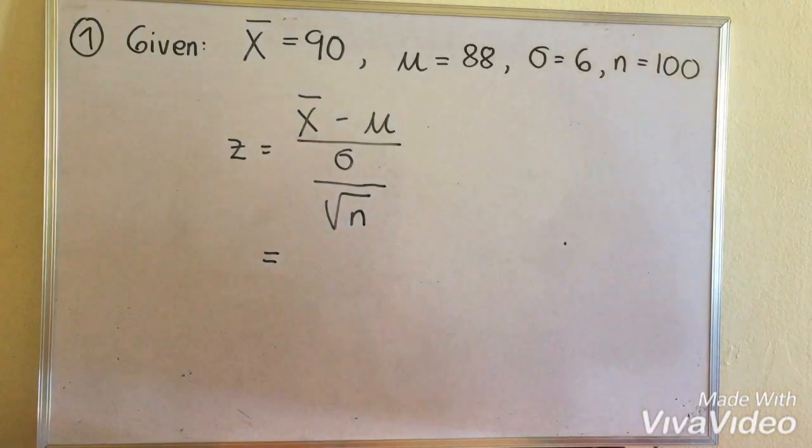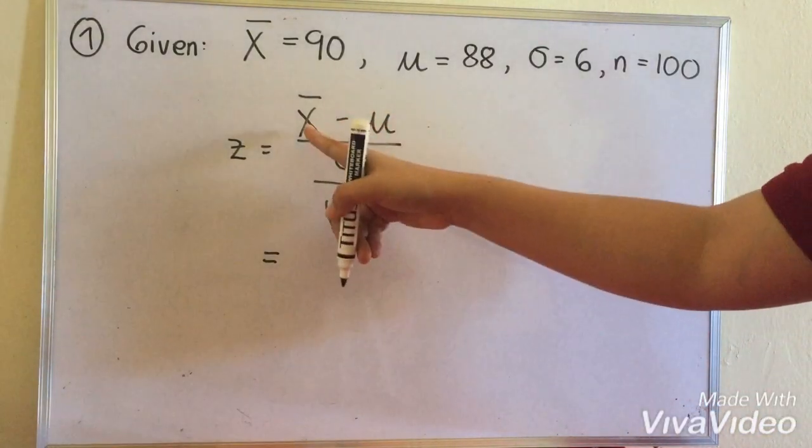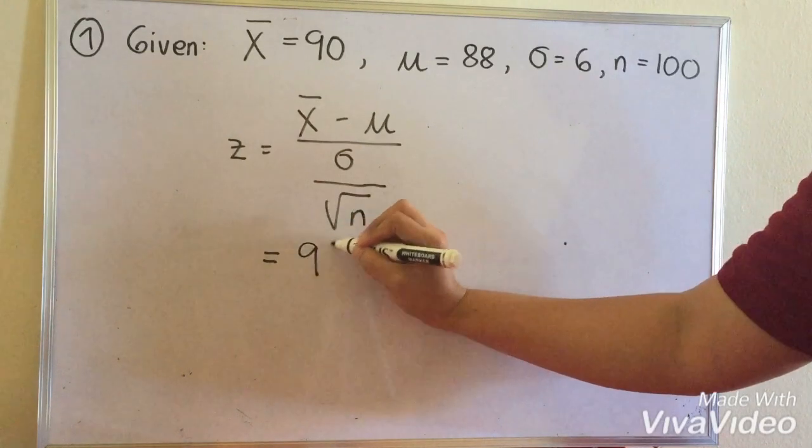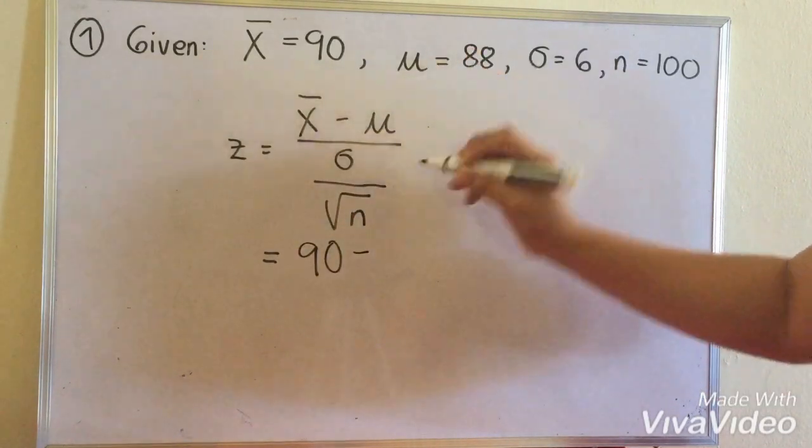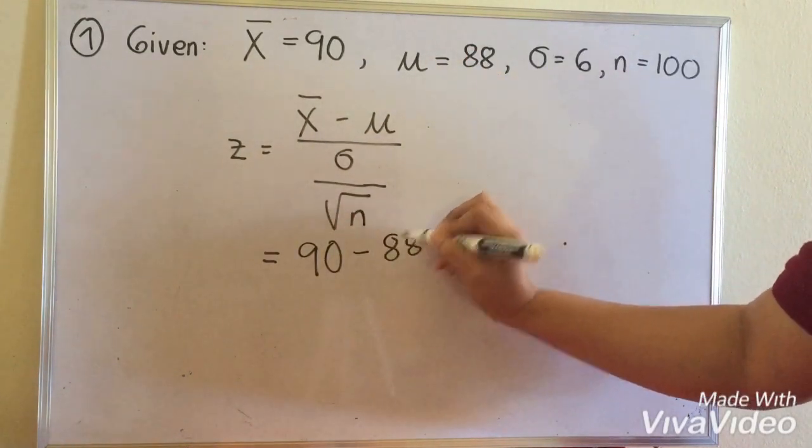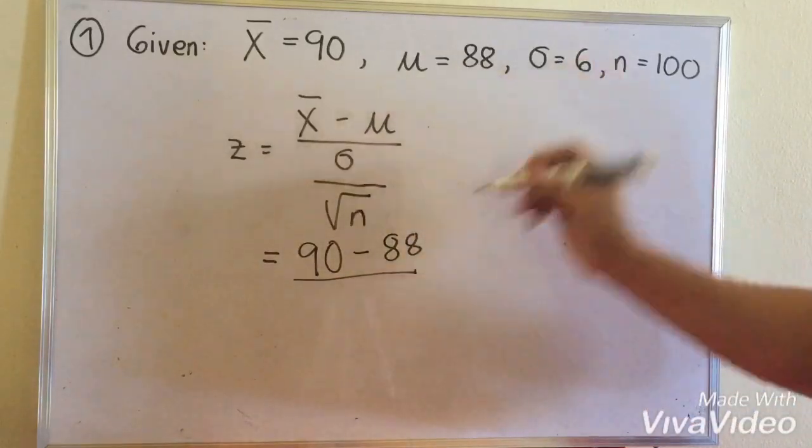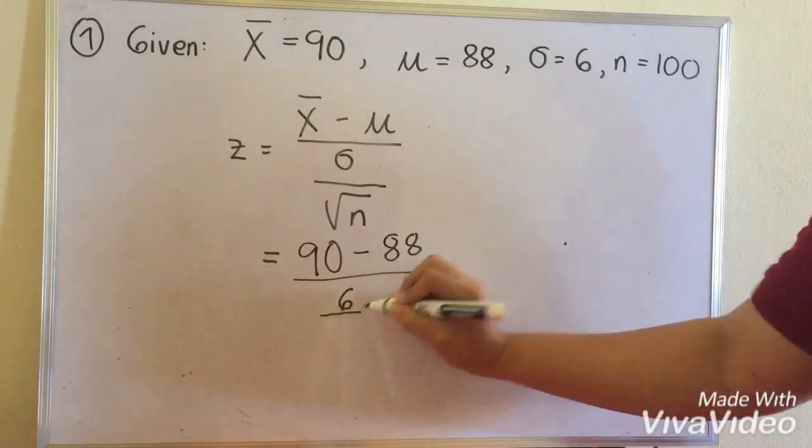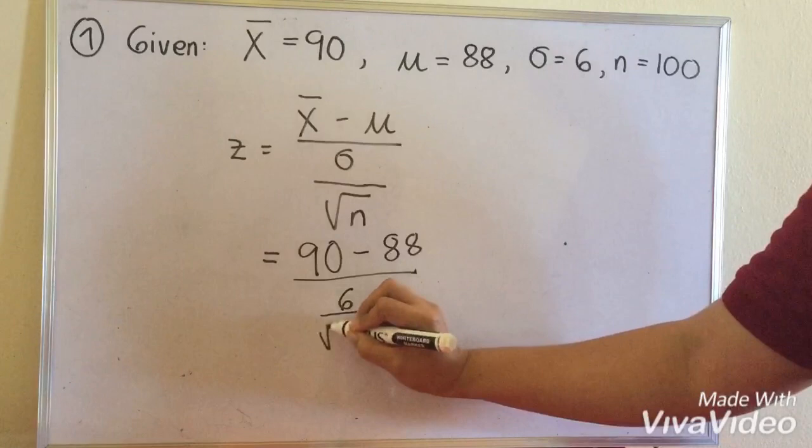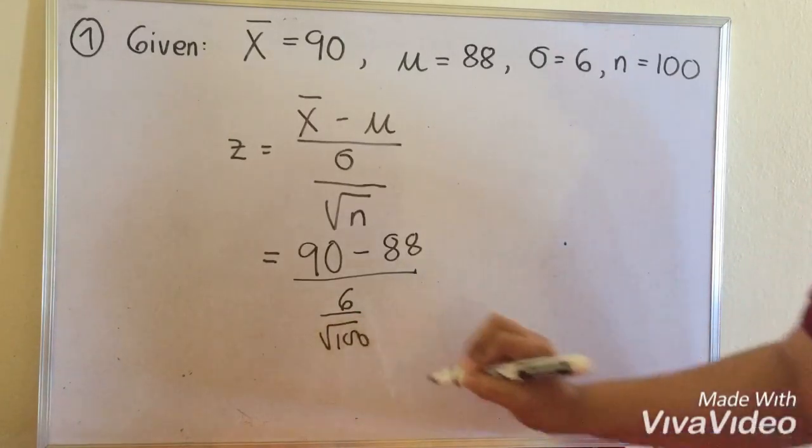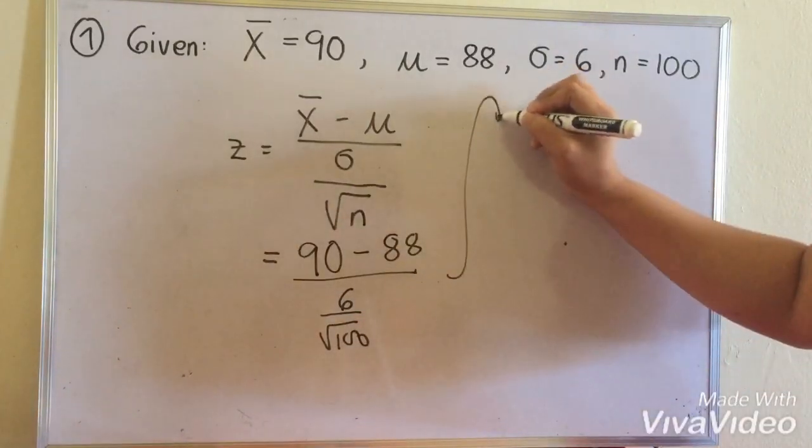Now we solve our test statistic Z. Our x̄ is 90, minus our population mean 88, over our sigma 6, over the square root of our sample size, 100. If we continue solving it...